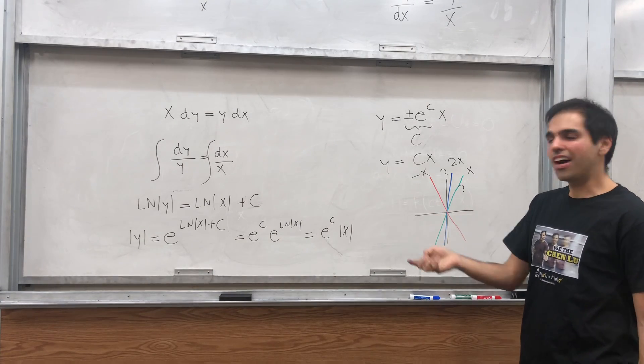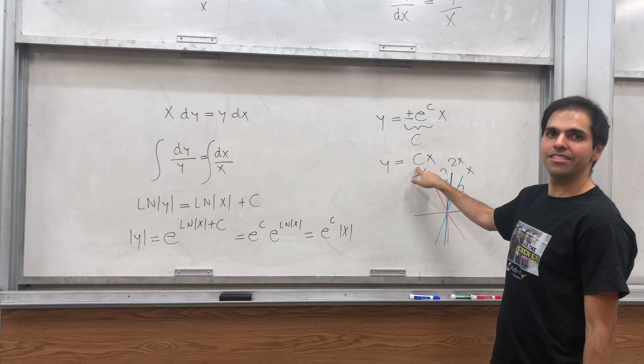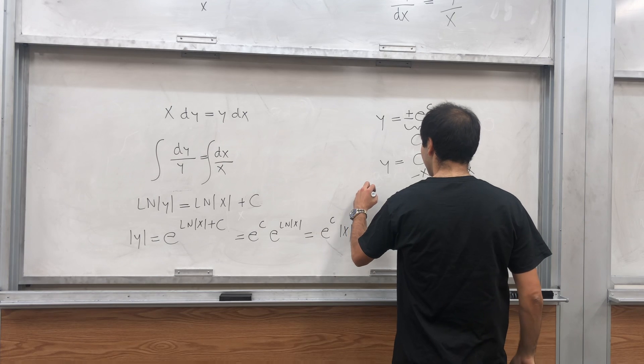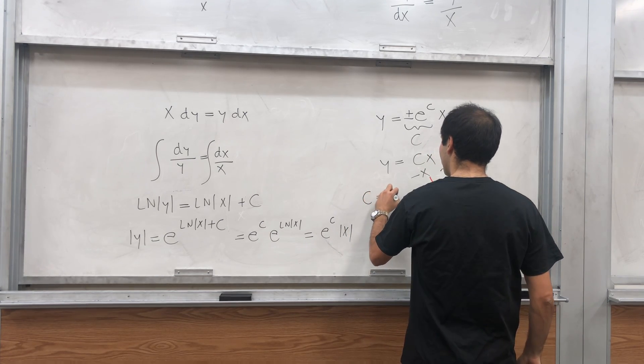But here it's not too bad, because just like last time, we can just solve for the constant. So the constant is just y over x.